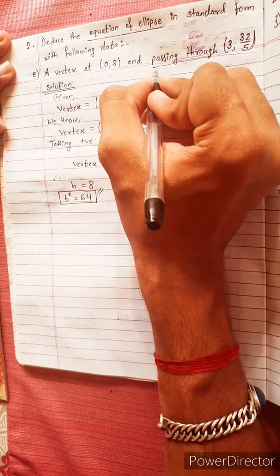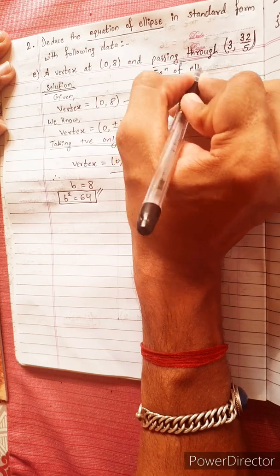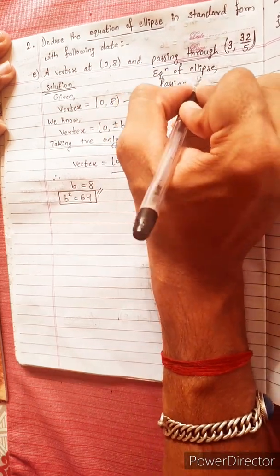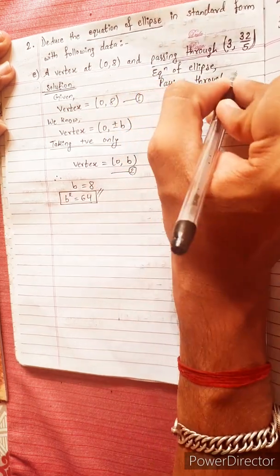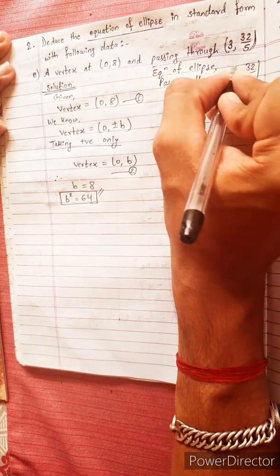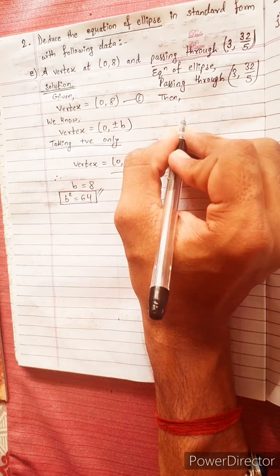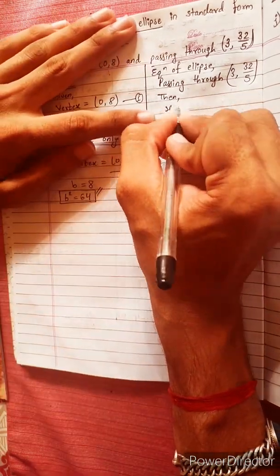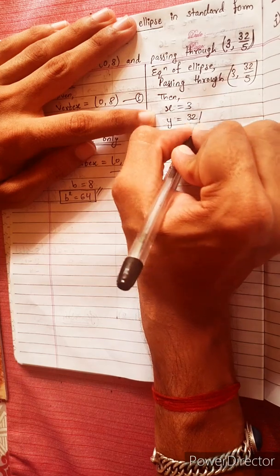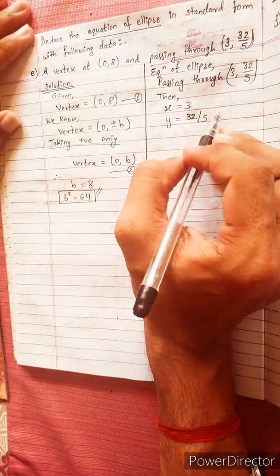Equation of ellipse passing through (3, 32/5). Since this equation passes through that point, we substitute x equal to 3 and y equal to 32/5 into the equation.